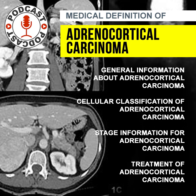Several staging systems for adrenocortical carcinoma, ACC, are in use. The American Joint Committee on Cancer, AJCC, staging system for ACC determines stage based on the size of the primary tumor, the degree of local invasion, and whether it has spread to regional lymph nodes or distant sites. Proper staging should include CT of the abdomen and chest. Magnetic resonance imaging, MRI, may add specificity to CT evaluation of an adrenal mass. In-phase and out-of-phase T1-weighted imaging may be the most effective non-invasive method to differentiate benign from malignant adrenal masses.